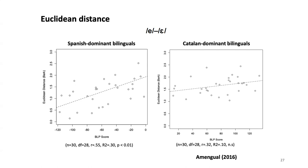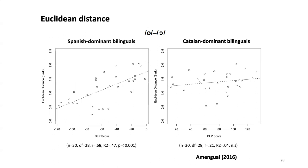Looking at the scores, we find a correlation: as you become more Spanish dominant, you have a smaller Euclidean distance between those mid vowel targets. For Catalan dominant bilinguals, the values are more or less stabilized — individual BLP scores weren't as predictive. But for Spanish dominant bilinguals they definitely were. We see this for the front mid vowel contrast as well as the back mid vowel contrast — the same pattern.